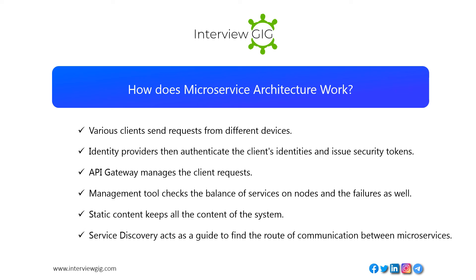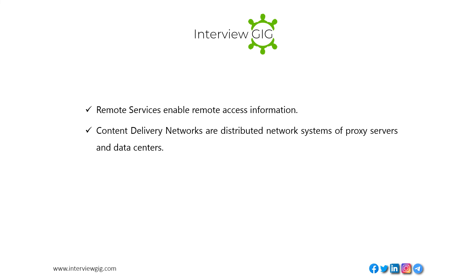Various clients send requests from different devices. Identity providers authenticate the client's identities and issue security tokens. API gateway manages the client requests. Management tools check the balance of services on nodes and handle failures. Static content keeps all the content of the system. Service discovery acts as a guide to find the route of communication between microservices. Remote services enable remote access to information. Content delivery networks are distributed network systems of proxy servers and data centers.